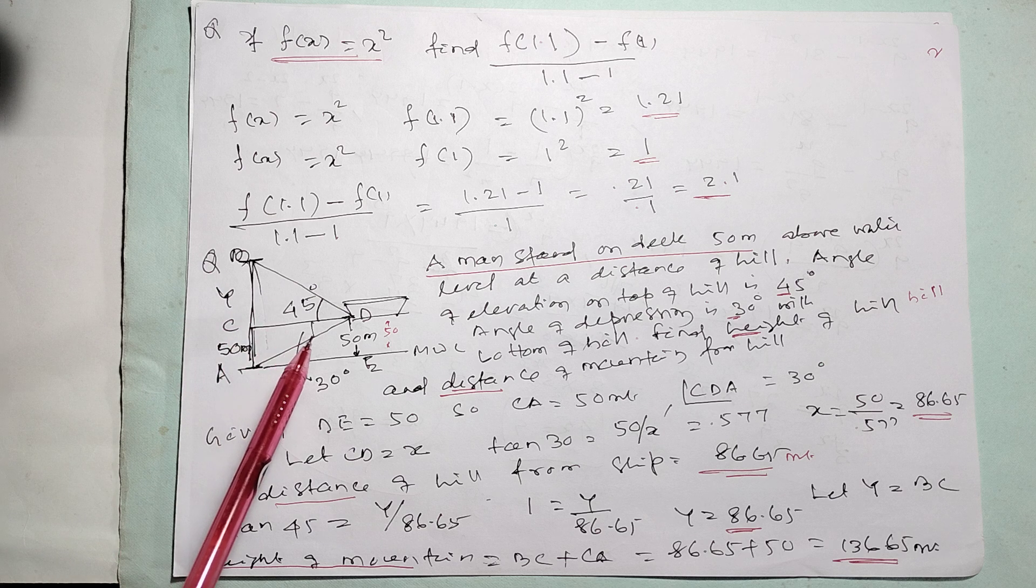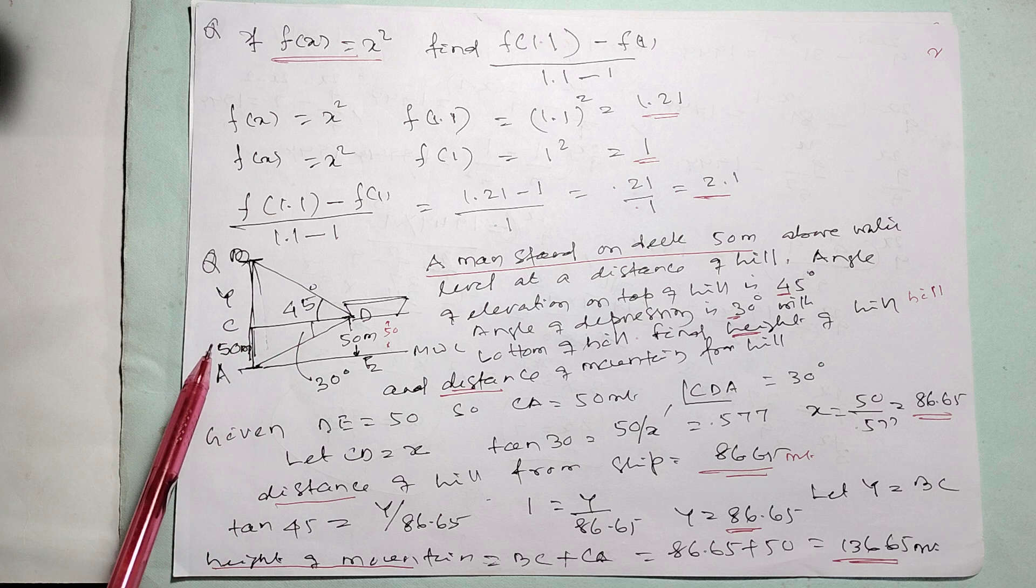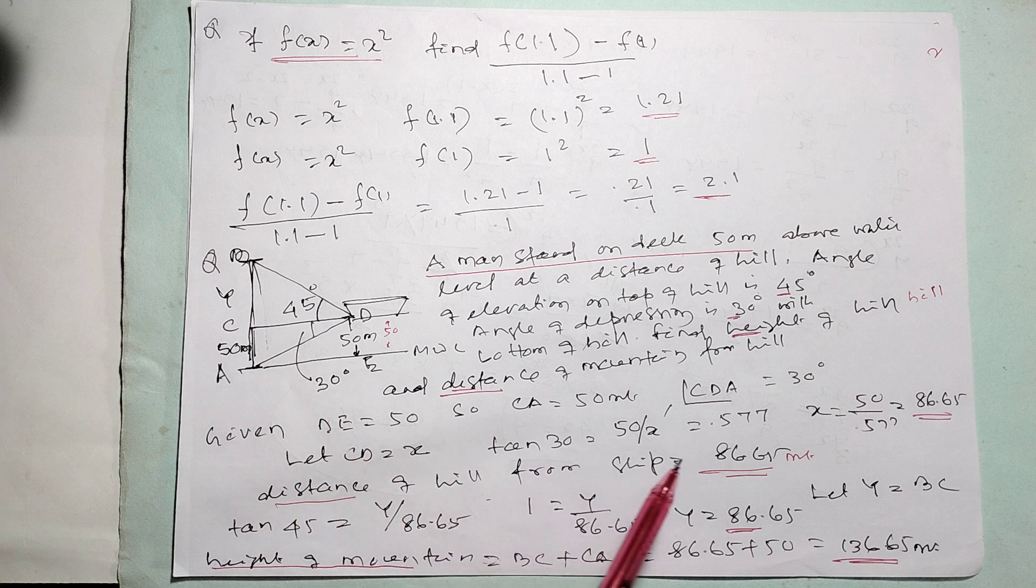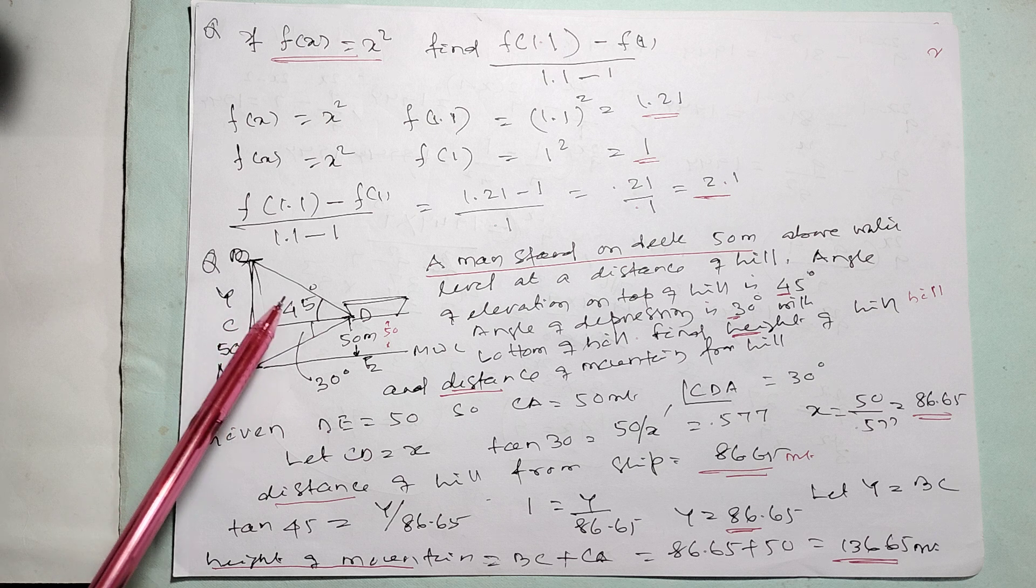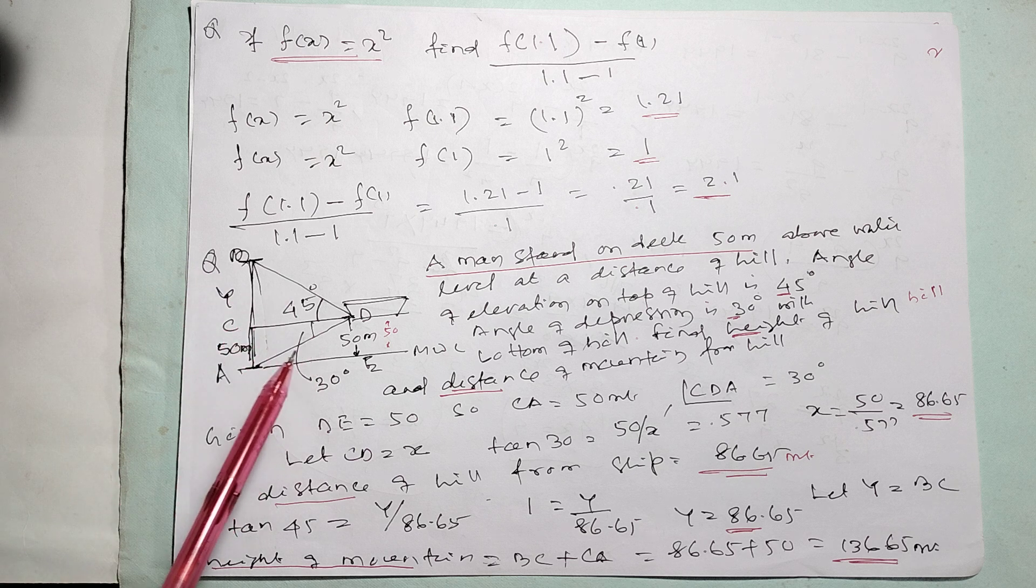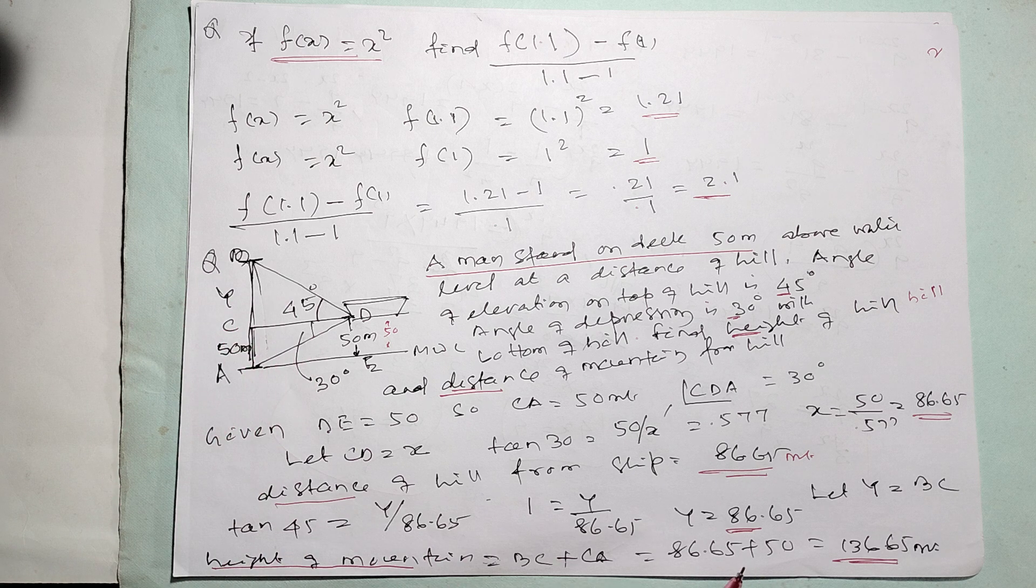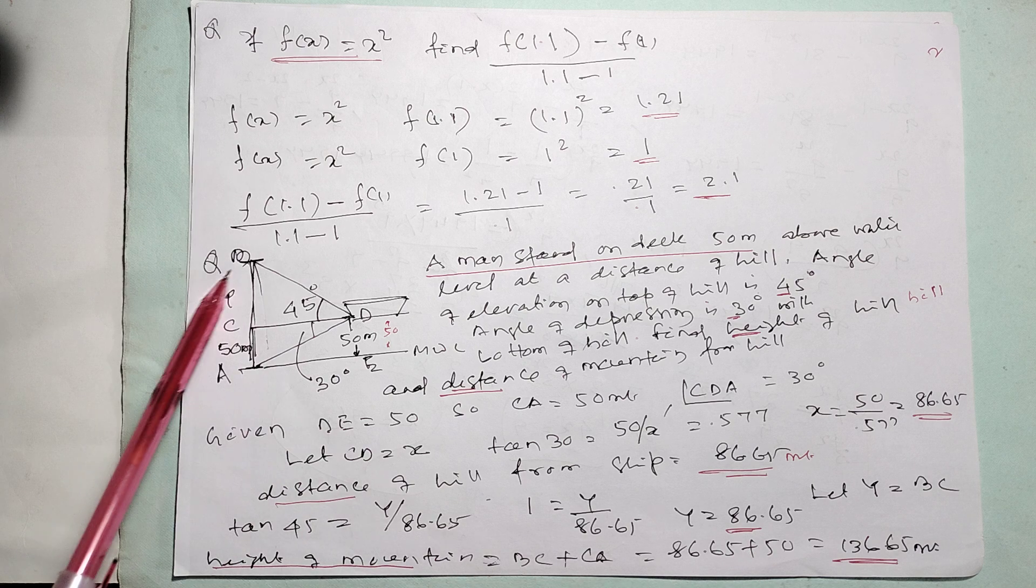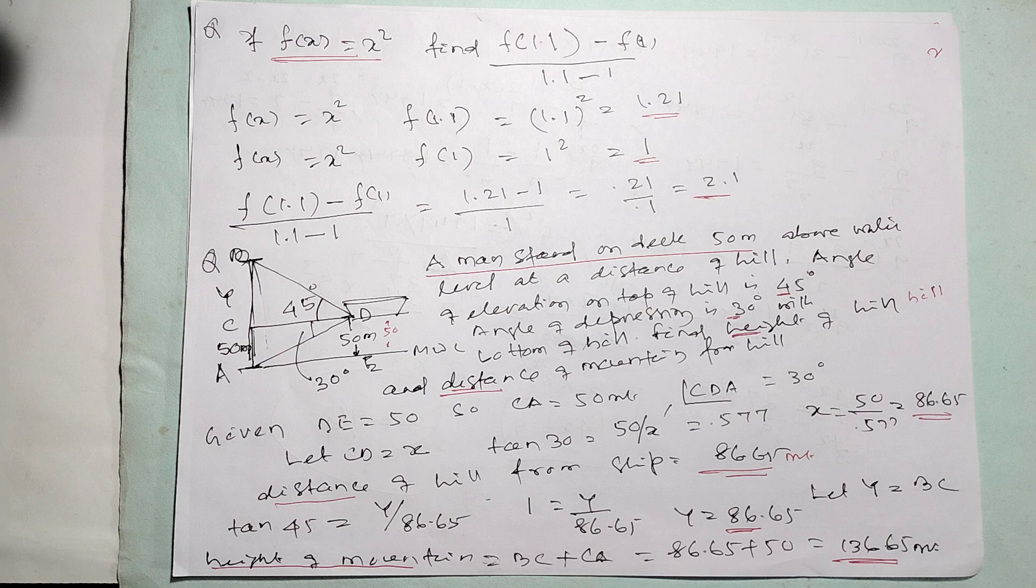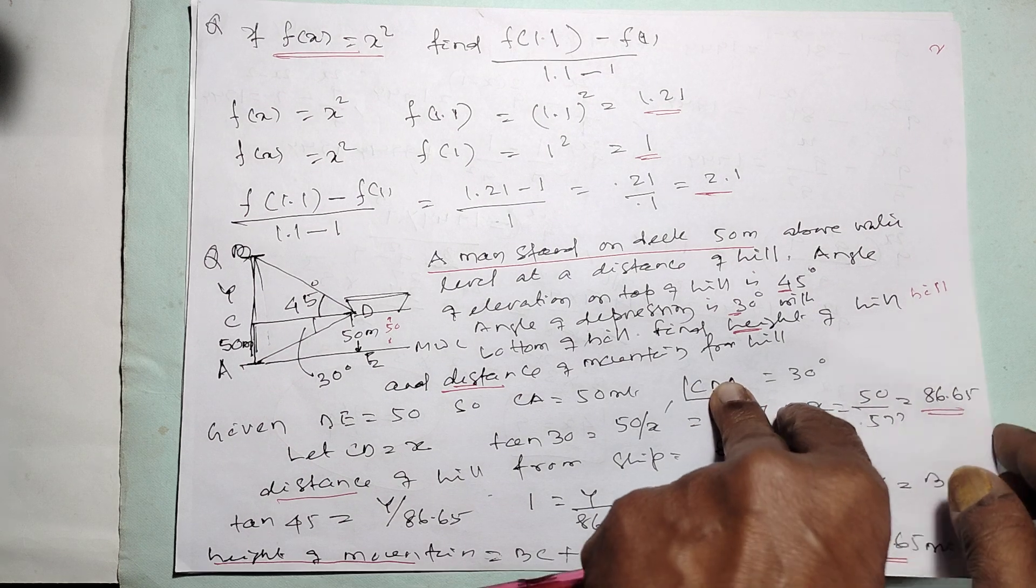So, if tan 30 degree is equal to 50 by x, x is coming 86.65. Then, your height, this tan 45 degree is y by x. x is already known. Y is coming 86.65 also. So, height of mountain BC and CA is 136.65.